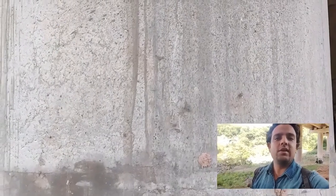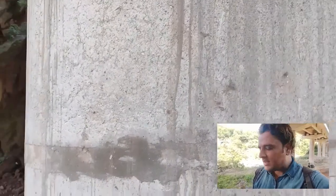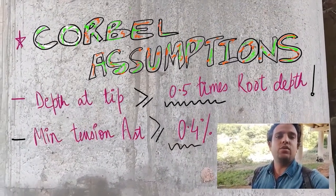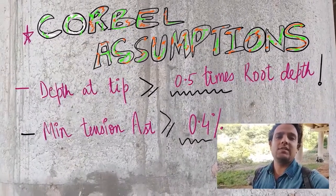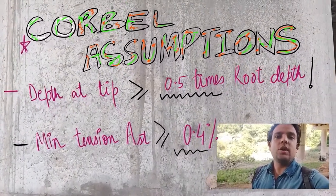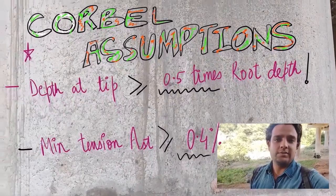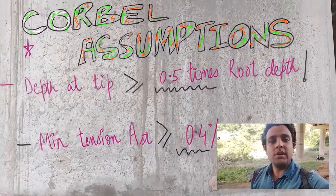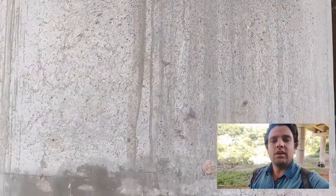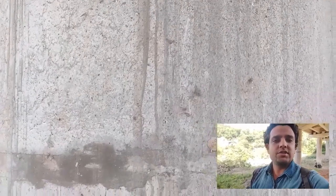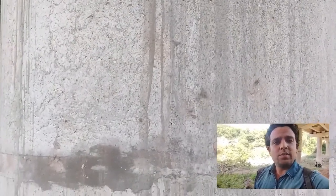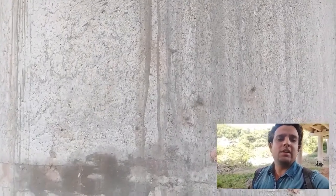So a cantilever will behave as a corbel if AV upon D is less than 1. There are also other conditions: the depth at the tip must be at least equal to or more than a minimum value, the main tension reinforcement should be a minimum of 0.4%, and the point of application of load should not be too far out. Some formulas and assumptions govern these criteria that must be fulfilled at all costs.